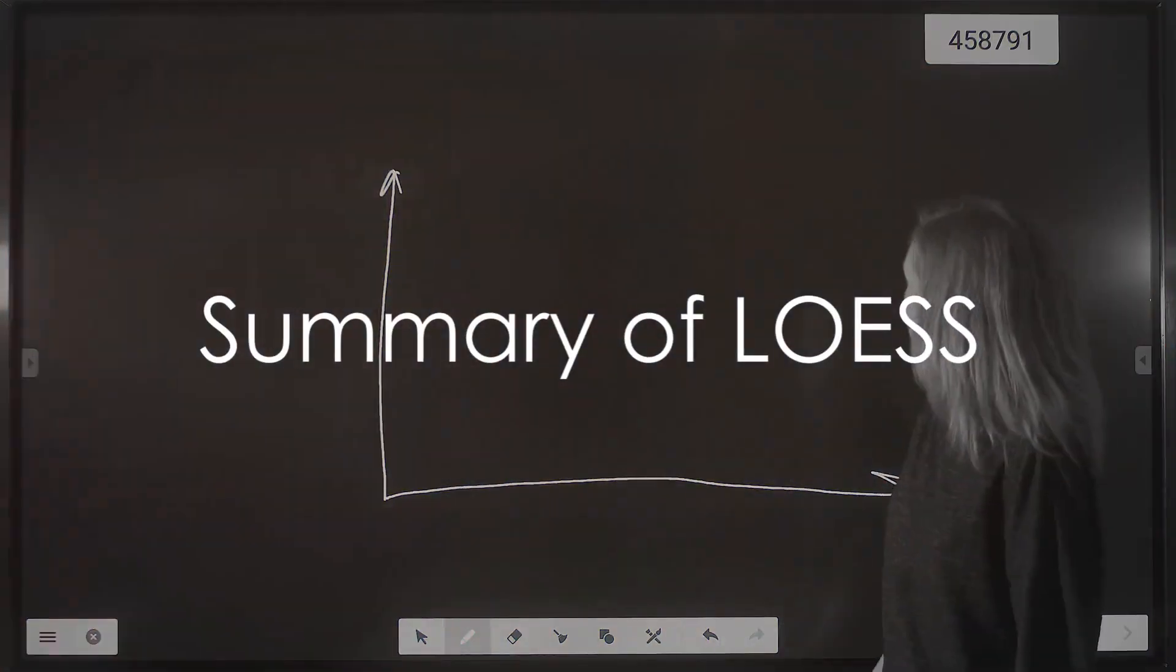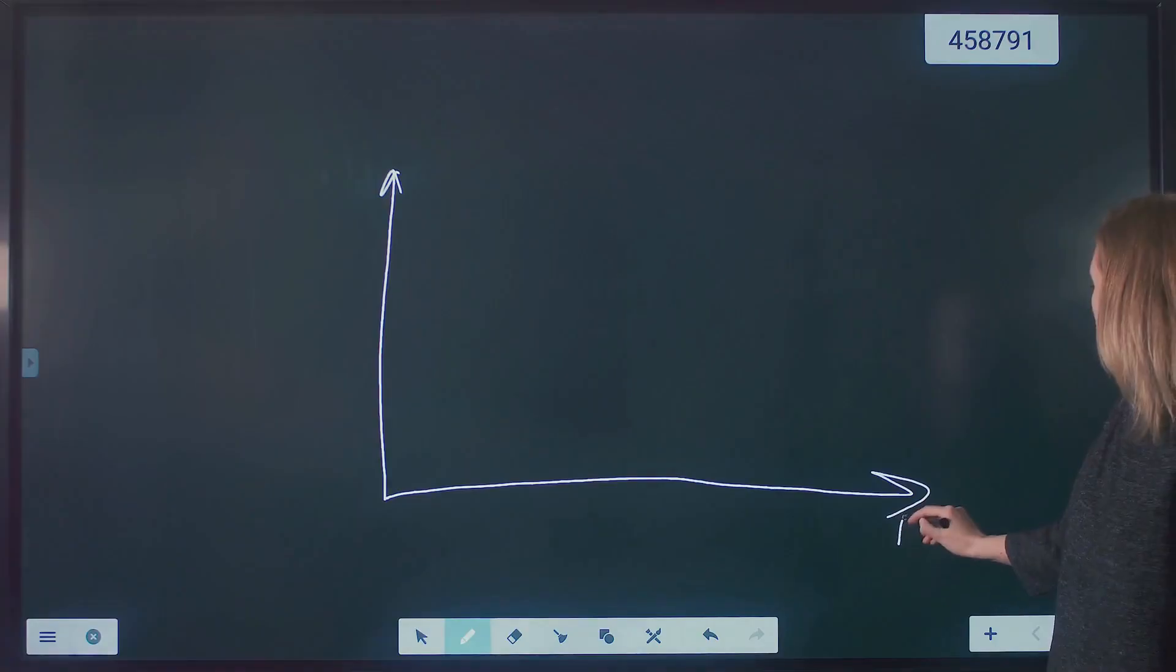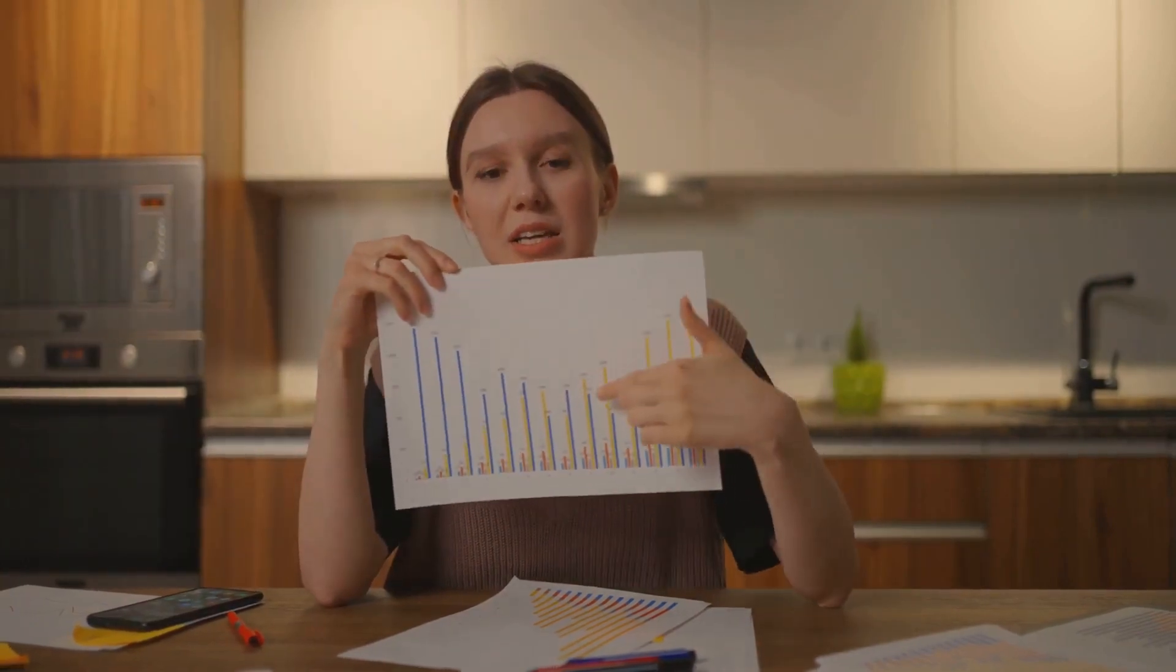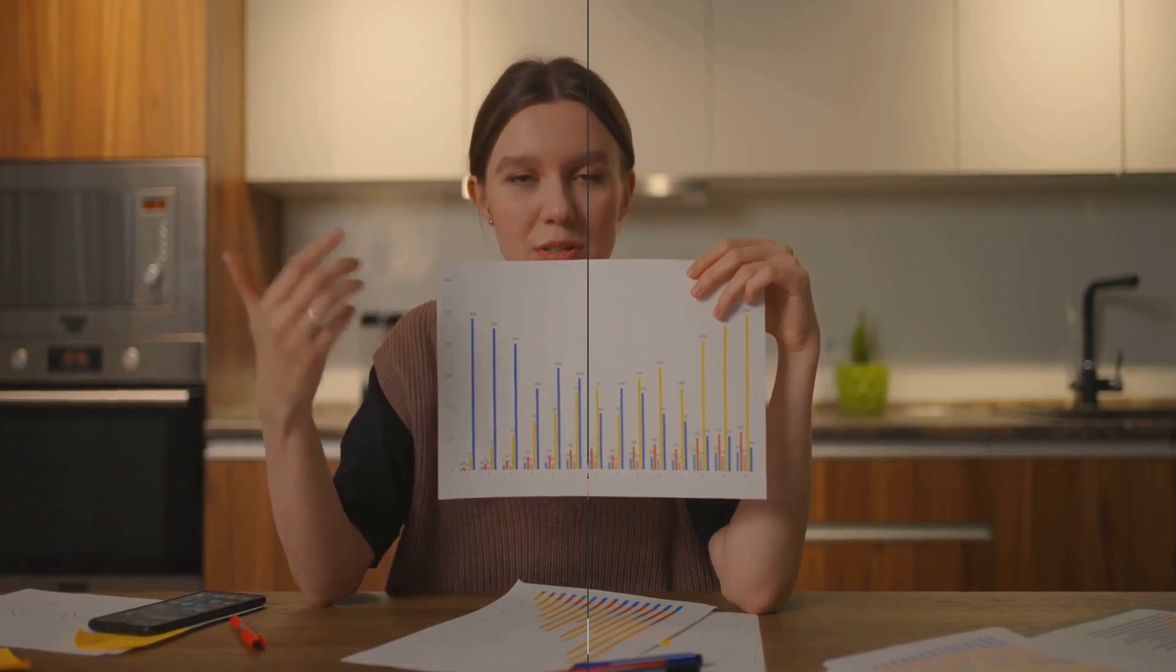To summarize, LOESS is a non-parametric method that combines multiple regression models in a k-nearest neighbor-based meta model. It fits simple models to localized subsets of your data to create a function that describes the deterministic part of the variation in your data point by point. It's like drawing a line of best fit but for complex non-linear relationships.